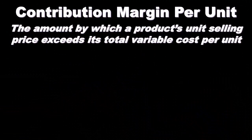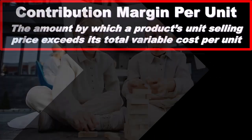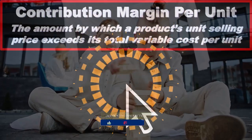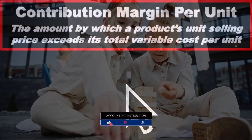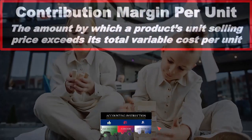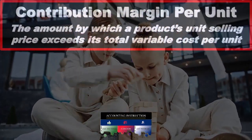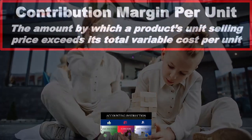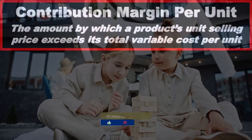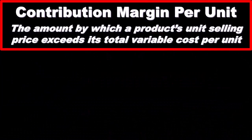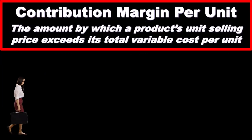Contribution margin per unit — these are going to be similar concepts. They're very related, but they can get a little bit confusing to consider what the contribution margin is, what the contribution margin per unit is, and what the contribution margin ratio is. We'll start with per unit because that's going to be the basic building block format. The contribution margin per unit is the amount by which a product unit's selling price exceeds its total variable cost per unit.